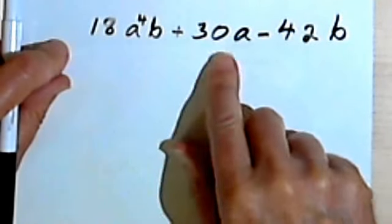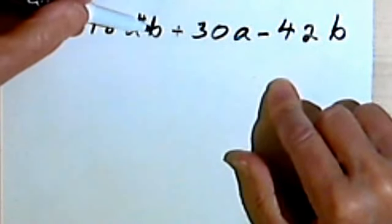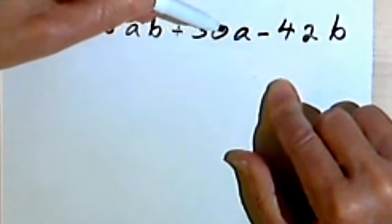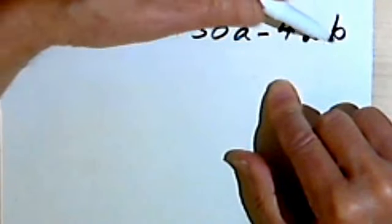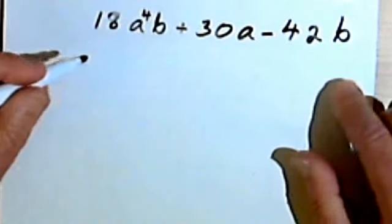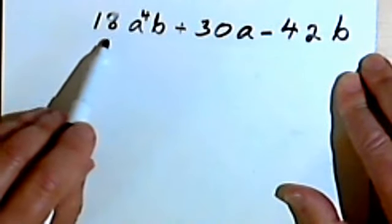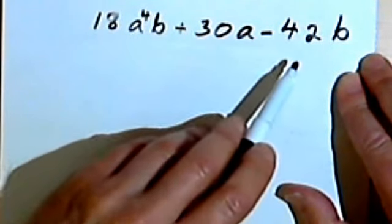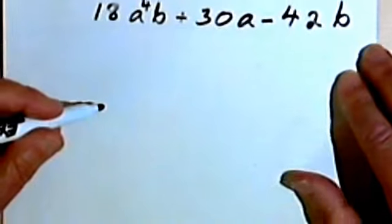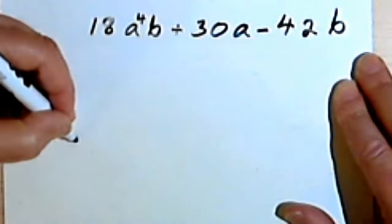So here we have three terms: 18a to the 4th b, plus 30a, minus 42b. And once again, the variable shouldn't be hard, but I've got an 18, a 30, and a 42, and I want to find out what the greatest common factor is for them. So let's just write those.